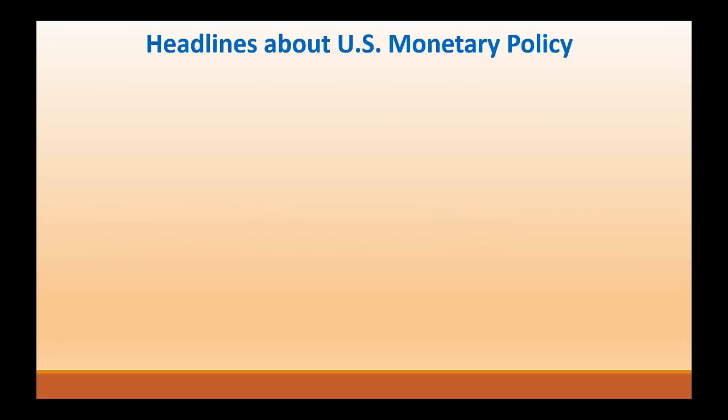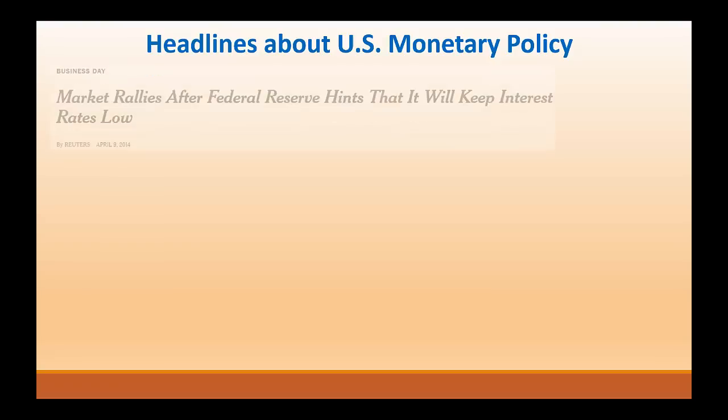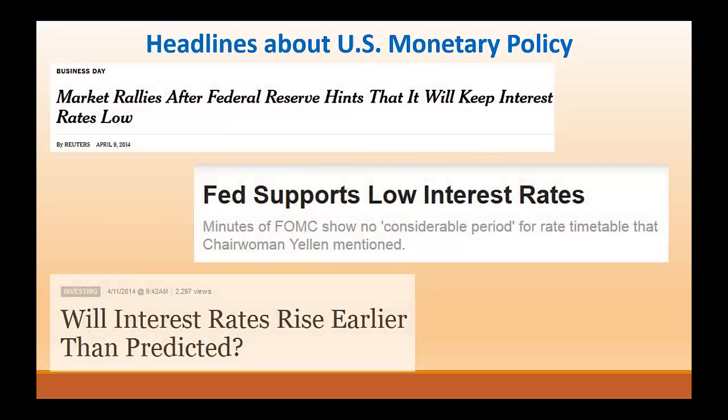If you were searching around to see if the Fed is engaged in contractionary or expansionary monetary policy, you won't see any headlines that indicate that the Fed is increasing or decreasing the money supply. Instead you'll see headlines about interest rates. The Fed doesn't have a particular number in mind when it conducts monetary policy. In fact, it's hard for the Fed to know the exact value of the money supply at any given point in time. What the Fed does know is that changes in the money supply affect short-term interest rates.